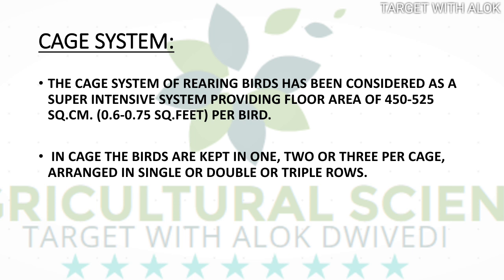The cage system for rearing birds has been considered a super intensive system, providing a floor area of 450 to 525 square centimeters per bird — or 0.6 to 0.75 square feet per bird. It is a very profitable system. In the cage, birds are kept 1, 2, or 3 per cage.